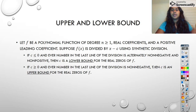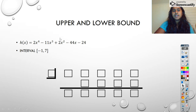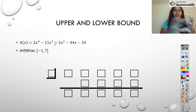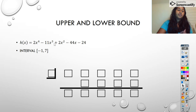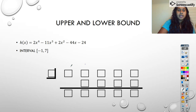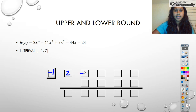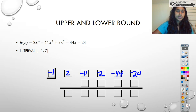The final thing we're going to talk about is the upper and lower bounds. Here's our formal definition, but I'm just going to go ahead and show that to you. So I have this function H of x, and I went ahead and plugged it into a calculator and got an interval where my real zeros are going to be — that's from negative one to seven. So all I'm literally going to do is plug those values in and test them. I would test that negative one: two, negative 11, negative 44, and negative 24.